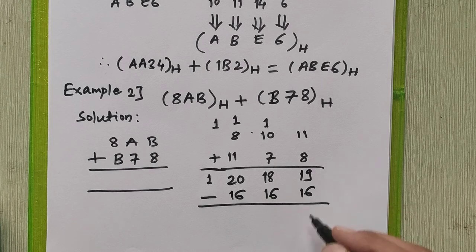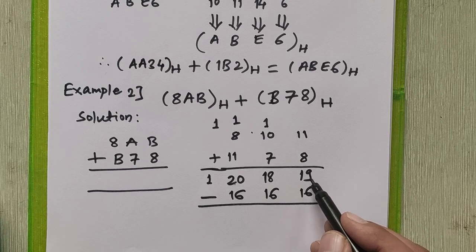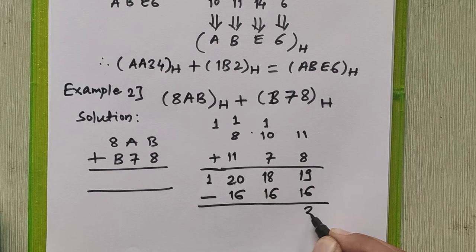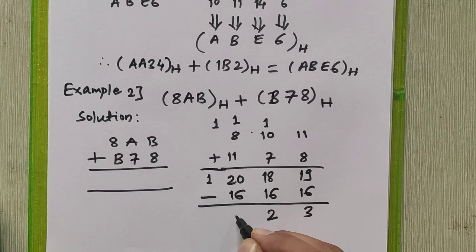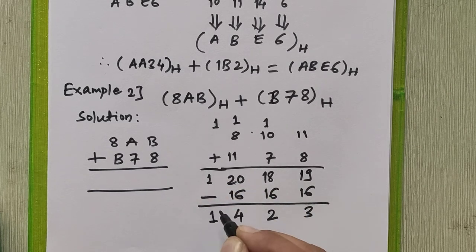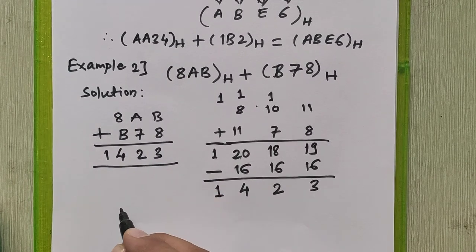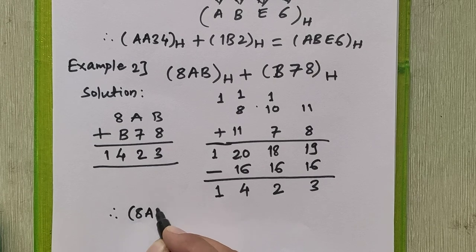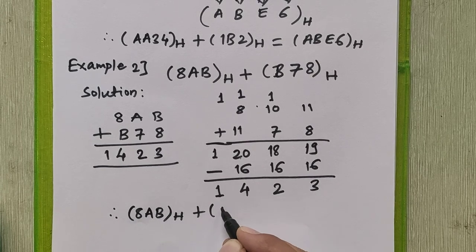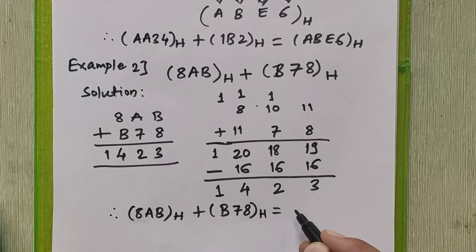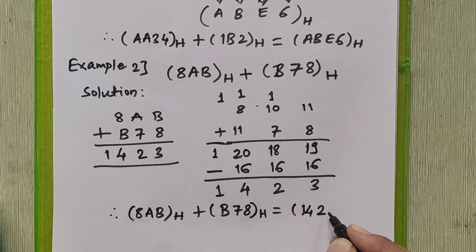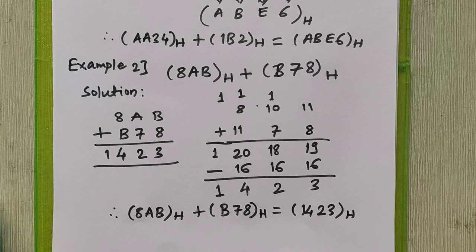Performing the subtraction: 19 minus 16 is 3, 18 minus 16 is 2, 20 minus 16 is 4, and the leading 1 stays as it is. So the answer is 1, 4, 2, 3. Therefore, 8AB in hexadecimal plus B78 in hexadecimal equals 1423 in hexadecimal. This is how we can perform addition of any two hexadecimal numbers.